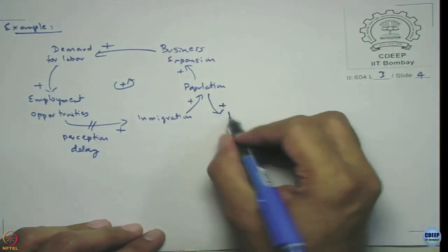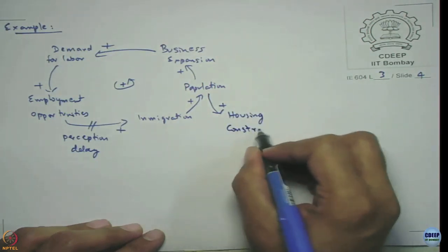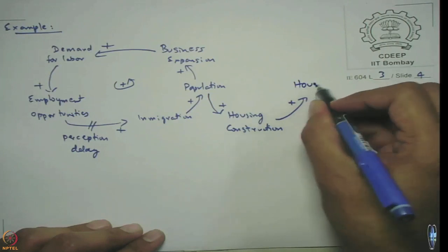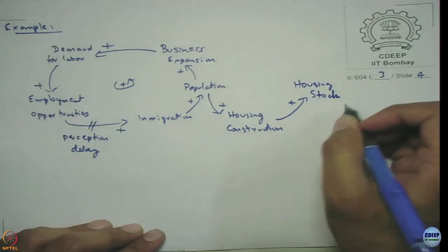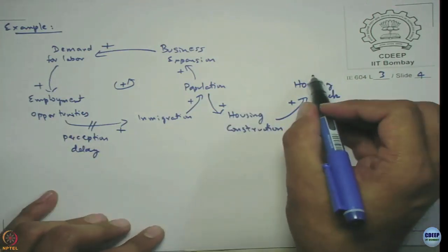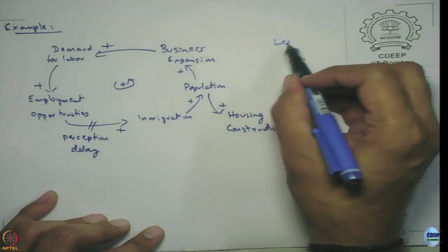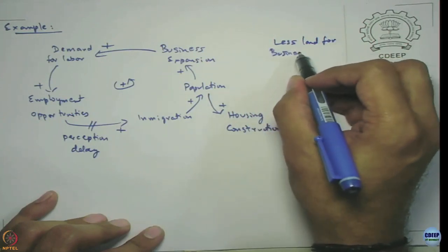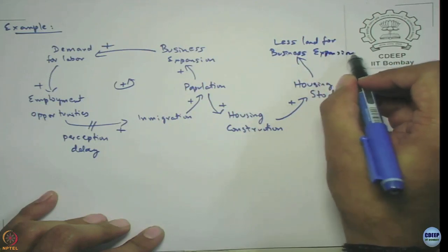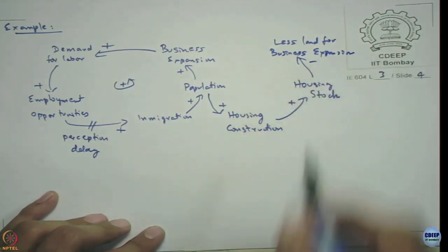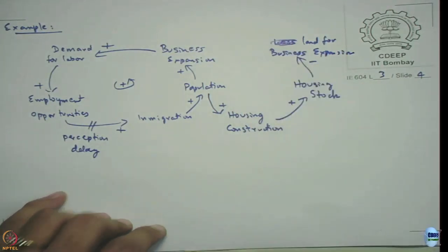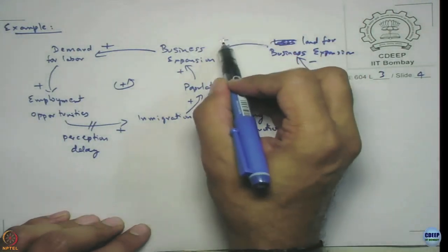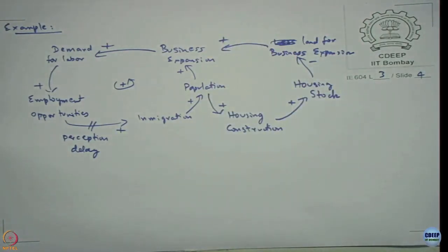Population increase drives housing construction. Housing construction increases housing stock. As housing stock increases, there is less land for business expansion. As land for business expansion decreases, business expansion further decreases. So when we read the loop — we have two loops.